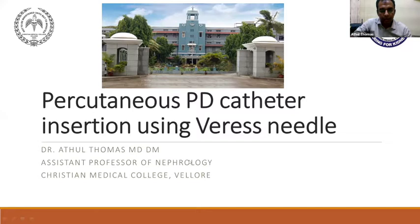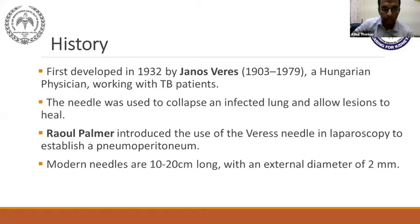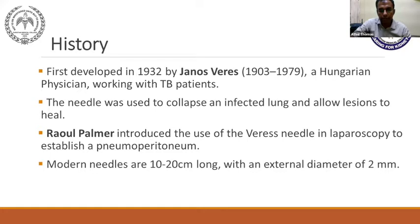I'll show what the Veress needle is. I don't know how many people are using this technique. It was first described by Jan Spares, a Hungarian physician, for TB patients back in 1932 — he used it to collapse infected lungs and allow healing. Roald Palmer introduced it for laparoscopy to establish pneumoperitoneum in the early 1970s. Modern needles are around 10 to 20 centimeters, varying with patient size.